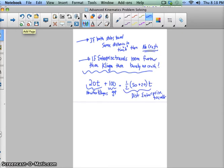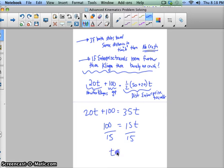As I rearrange this equation and solve, we got 20T plus 100 equals 35T. Subtract 20T from both sides, I get 15T equals 100. Then divide both sides by 15, and I get T equal to 100 over 15, which is about 6.67 seconds.